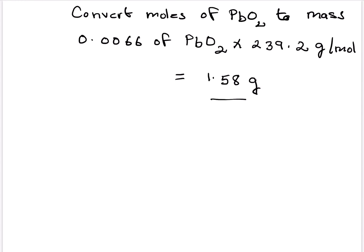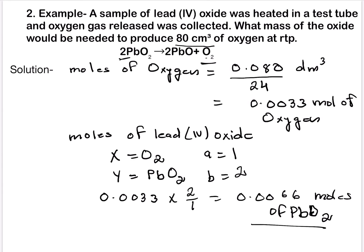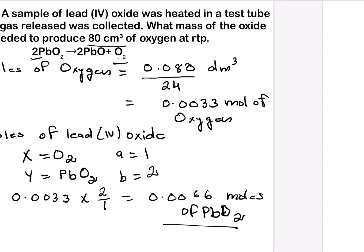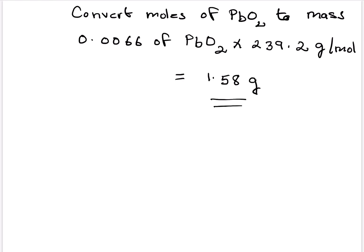This will be equal to 1.58 gram. So this is the final answer to the question. So what mass of oxide would be needed to produce 80 cm³ of oxygen at RTP? It is 1.58 gram. I hope you have understood it.